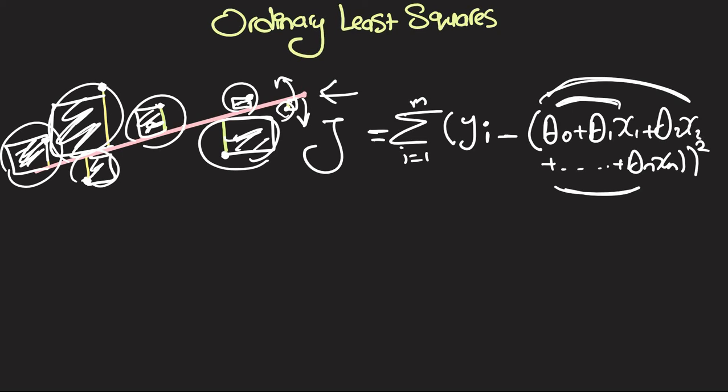Okay, so we can try to make this more beautiful by defining a column vector of thetas. So that's going to be theta, and it's going to have theta naught, theta 1, all the way to theta n, and then also a column vector for x. That's going to start with 1, then x1, then x2, all the way to xn.